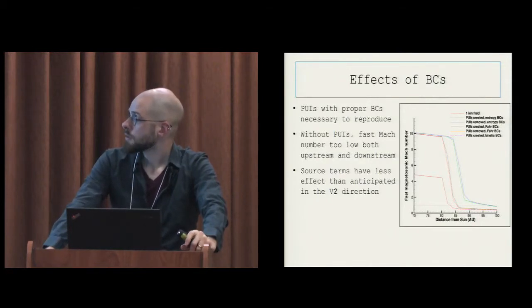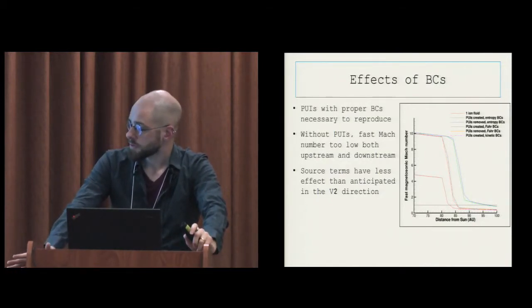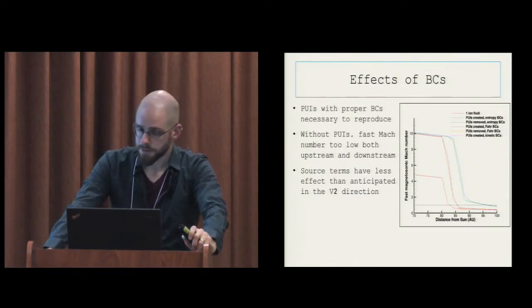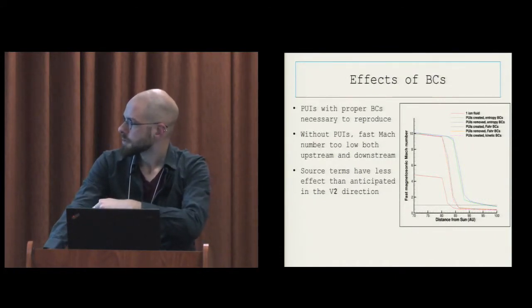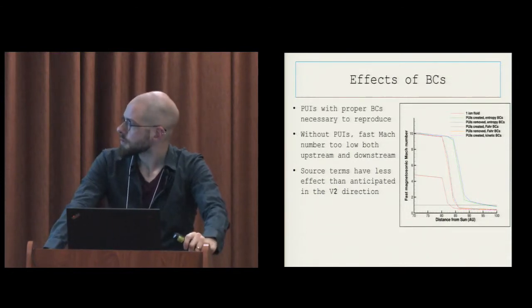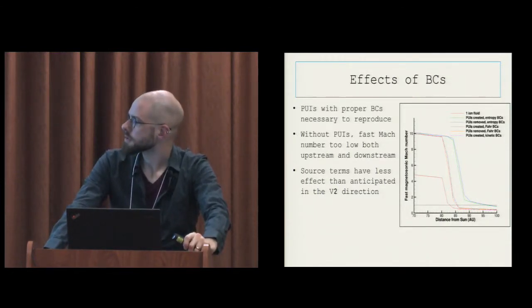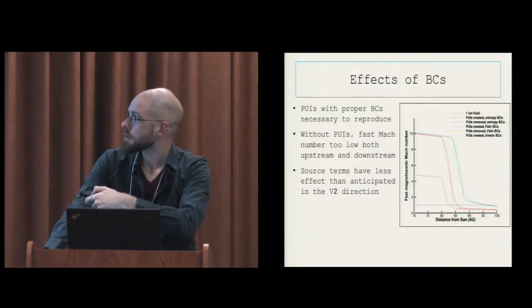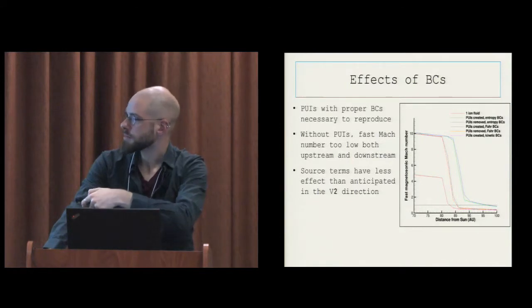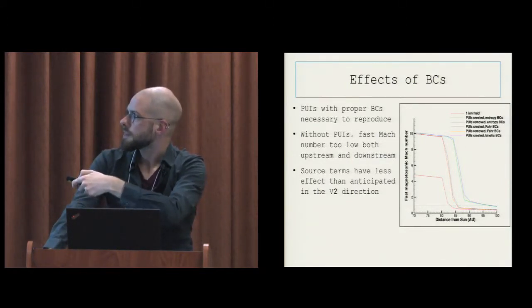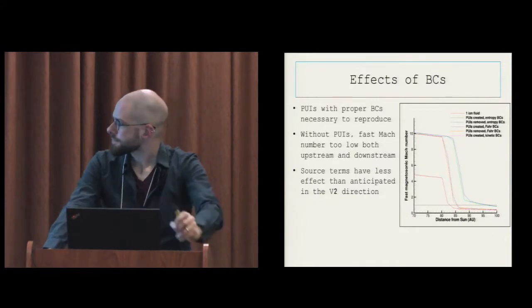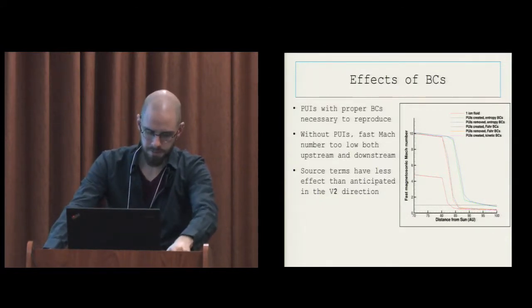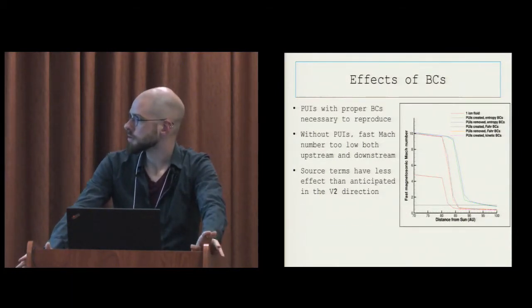Effects of the boundary conditions: wanted to recreate the Voyager 2 observations that the solar wind is super-fast magnetosonic past the termination shock. It turns out that only the isentropic boundary conditions, where you essentially say that by fiat, have those. The other boundary conditions did not recreate that, so that was disappointing. But we do see that pickup ions are necessary, because this is the simulation without pickup ions, and it is nowhere near. The fast magnetosonic velocity measured was something around here, and then down here. Also see that different boundary conditions change where the termination shock is.